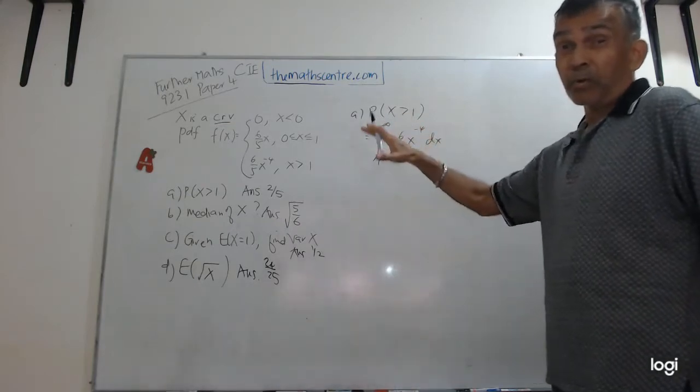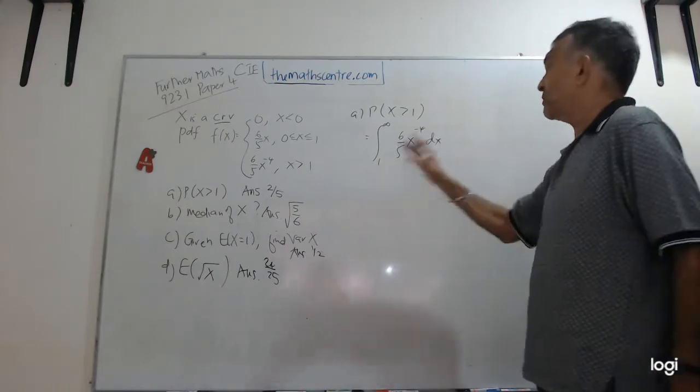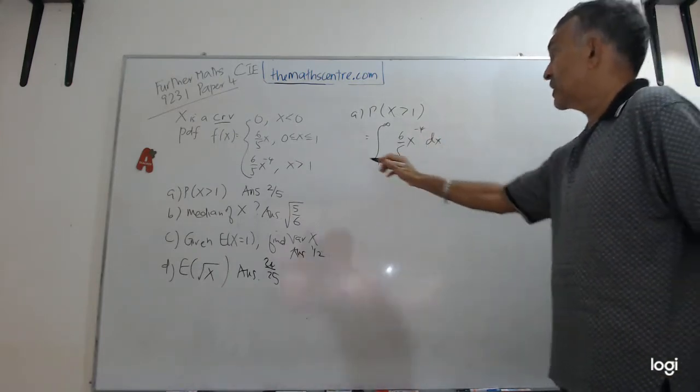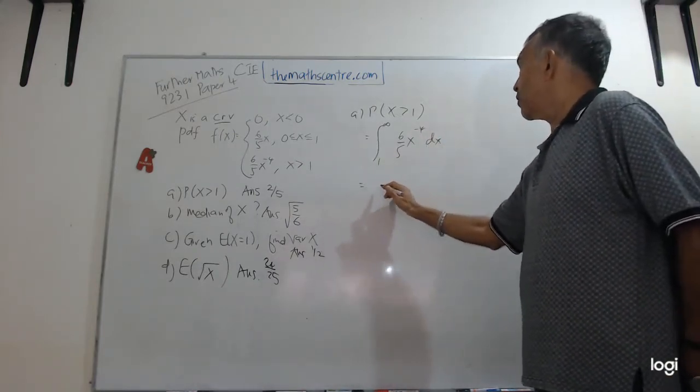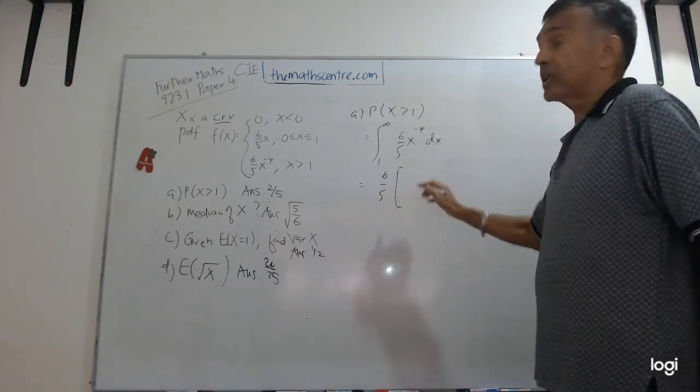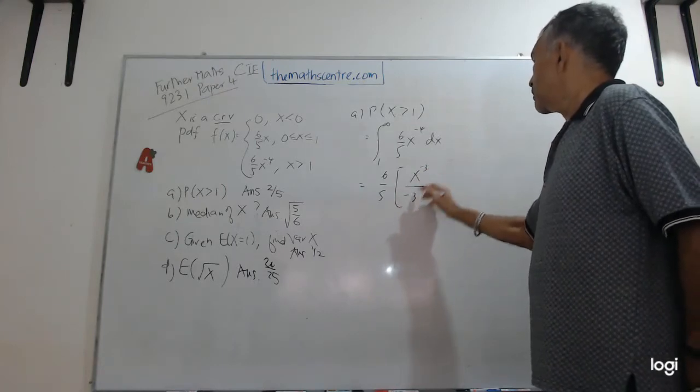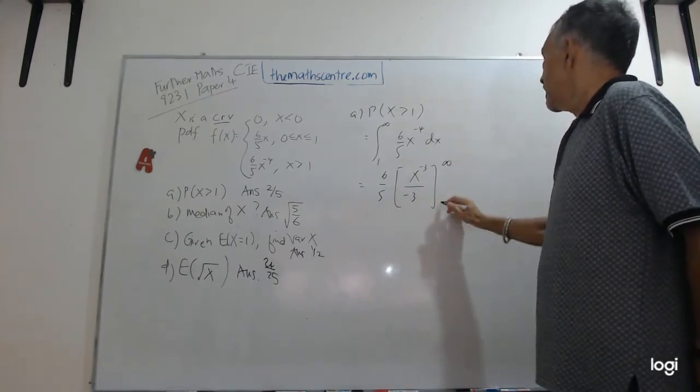So you can work with the complement and then take 1 minus that for the answer. But I'm just working it out as it appears, bigger than 1. So I have got 6 over 5, x to the power of minus 4, plus 1 will be minus 3, minus 3, and infinity, 1.